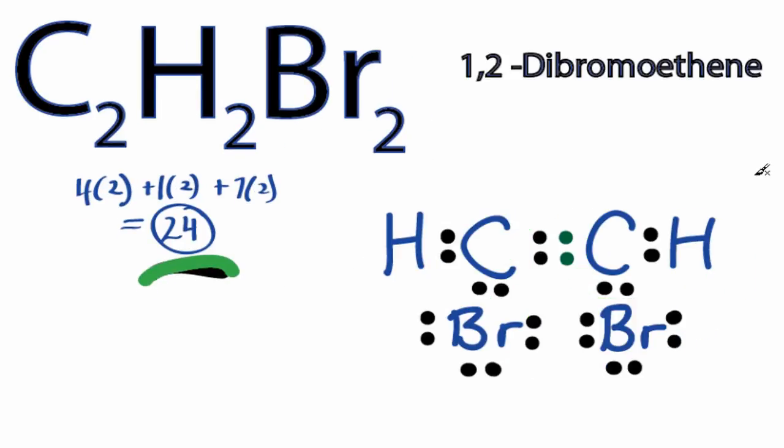For this C2H2Br2 Lewis structure, we really should call it 1,2-dibromoethene. The ene means we have the double bond here between the carbons, and the bromines are on the first and second carbon in this structure. If both bromines were on the first carbon here, we would call it 1,1-dibromoethene.